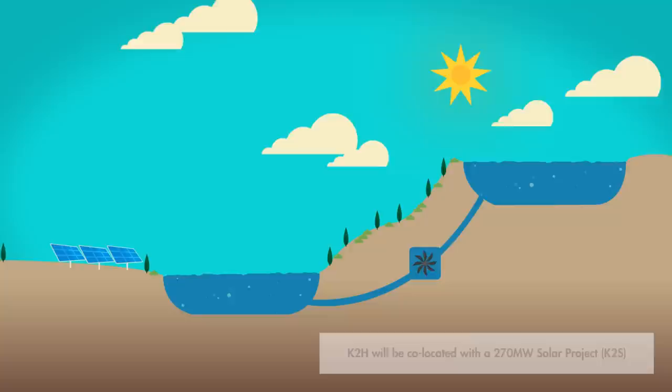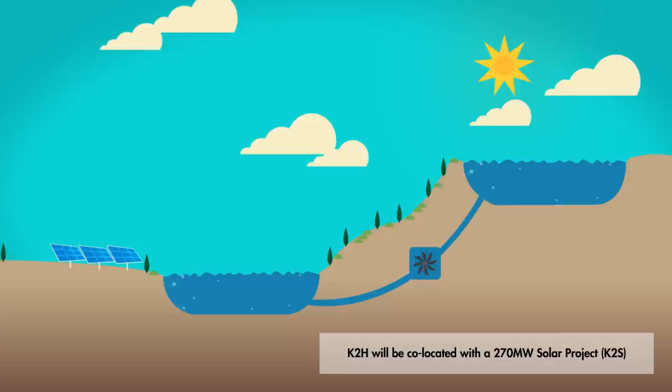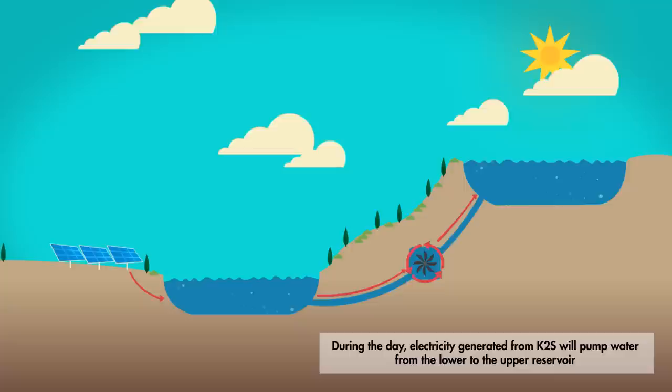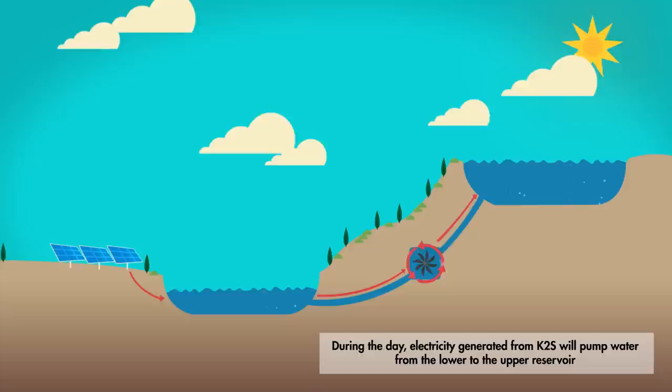K2H will be co-located with a 270 MW solar project, K2S. During the day, electricity generated from K2S will pump water from the lower to the upper reservoir.